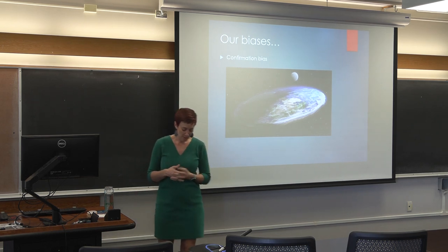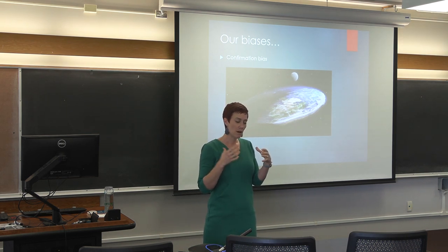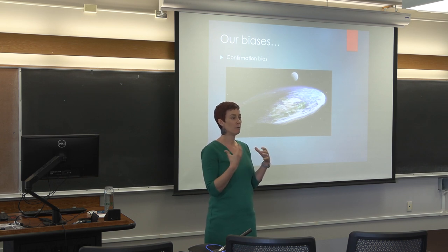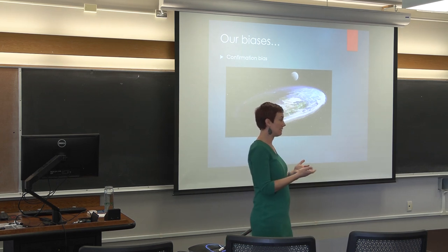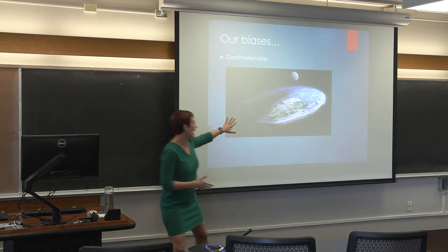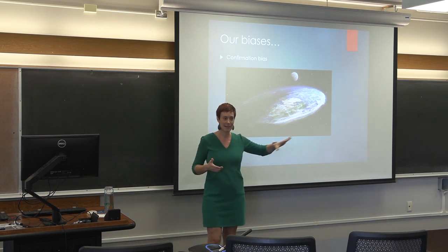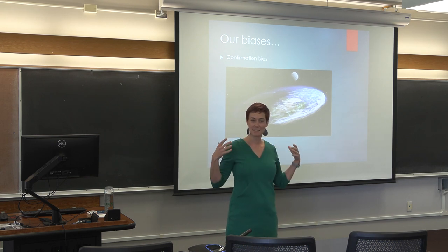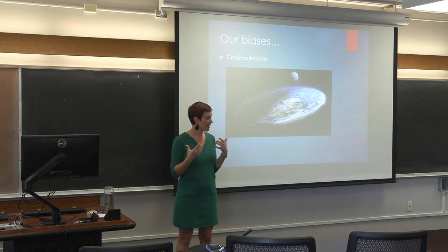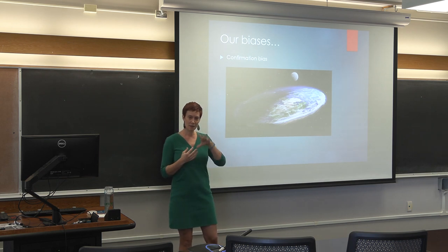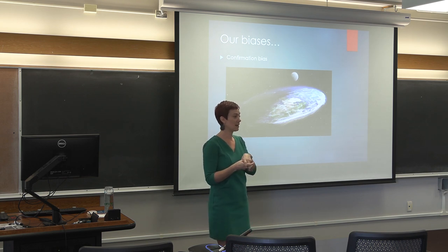One of my favorite examples is confirmation bias. Confirmation bias is the idea that when we are presented with information, we tend to interpret it in a way that's beneficial to us — we're looking for information that already tells us what we already think. I have a picture of flat earth here because it's one of my favorite examples. The flat earth society is a real thing — there is a group of individuals who still very much believe the earth is flat. A few years ago, someone got the idea to take the president of the flat earth society and his wife on a trip around the globe.